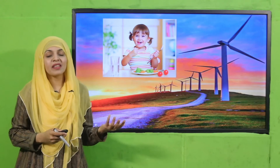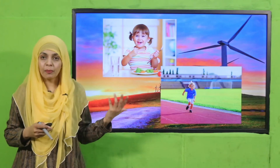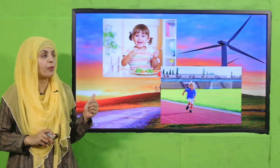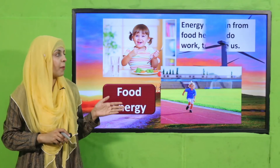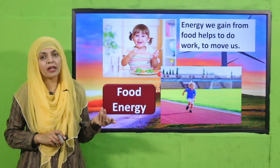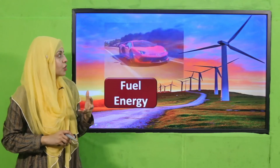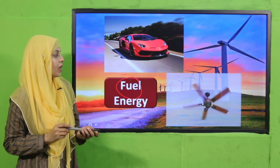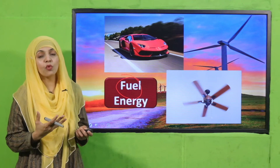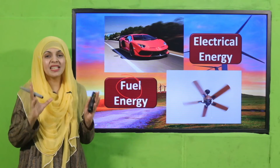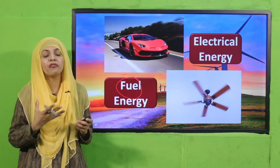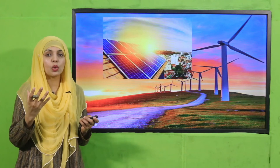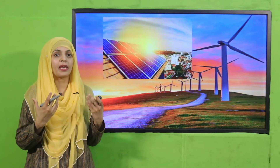Human beings and living things get their energy from food — for playing, running, reading, writing, moving, and walking. We get energy from our food, and that energy helps us do our work and makes us move. This car needs fuel for movement — energy comes from fuel. This fan needs electrical energy for movement — electricity is also a form of energy. Solar energy is also a form of energy; the sun's energy is helpful in generating electricity and doing other work.